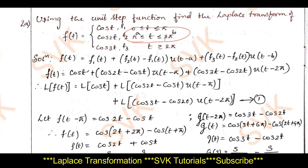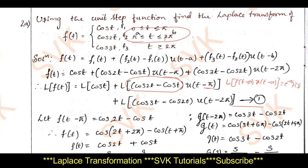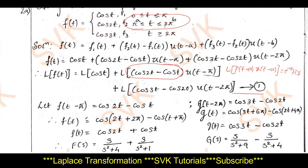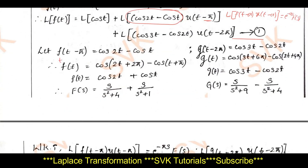After substituting f1, f2, f3 and taking the Laplace on both sides (equation 1), we need Laplace of f(t−a)·u(t−a) = e^(−as)·F(s). With a = π, we find f(t) by replacing t with t+π in the expression for f(t−π): cos(2(t+π)) = cos(2t+2π) = cos(2t); cos(π+t) = −cos(t), so −(−cos t) = +cos t.